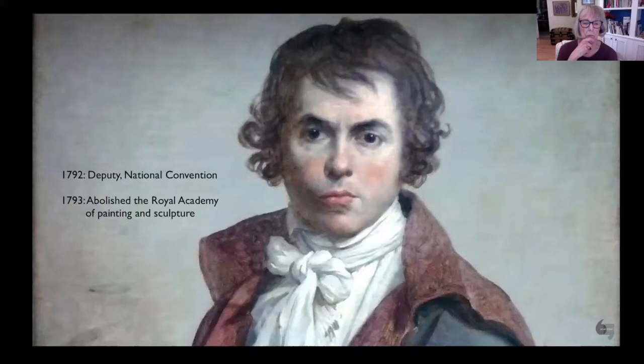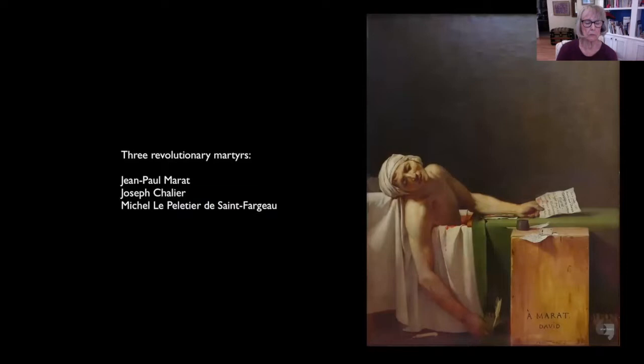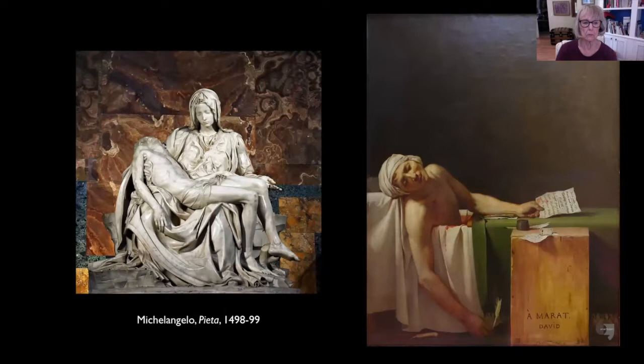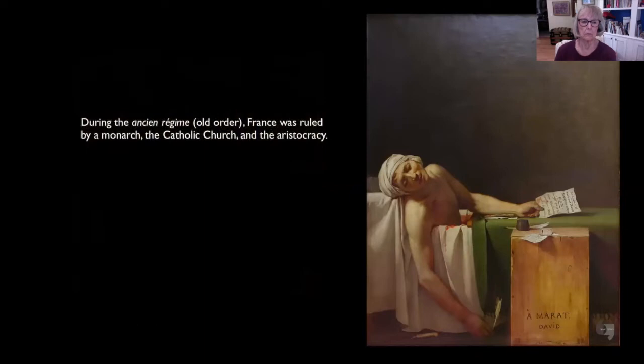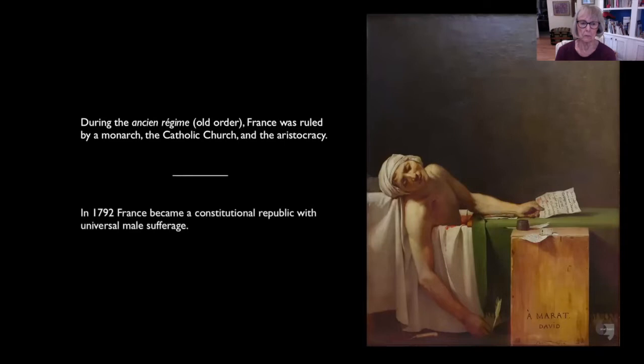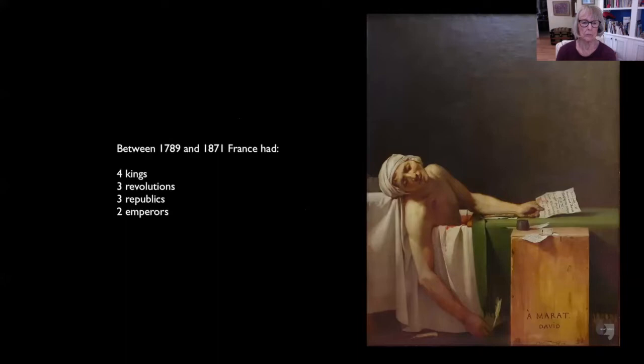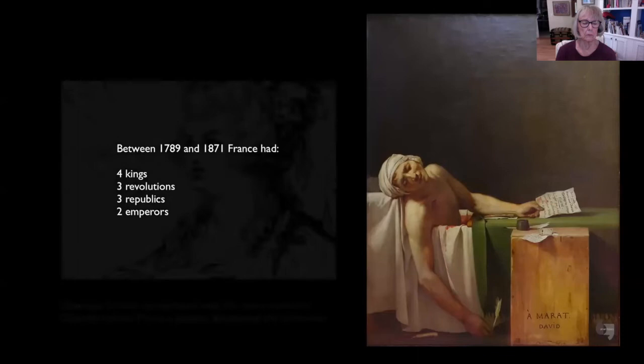The revolutionary government asked David to produce a series of three images that would heroicize new martyrs - not Christian martyrs, but martyrs to the revolution. This shift from Christian martyr to political martyr is an important one. We have the beginnings of the end of the monarchy, of the Ancien Régime, of an absolutist ruler, and the beginnings of a new republic where the people participate in the government. The French Revolution had been inspired, at least in part, by the American Revolution just a few years earlier, but France would oscillate between republican and royalist governments over the next century.